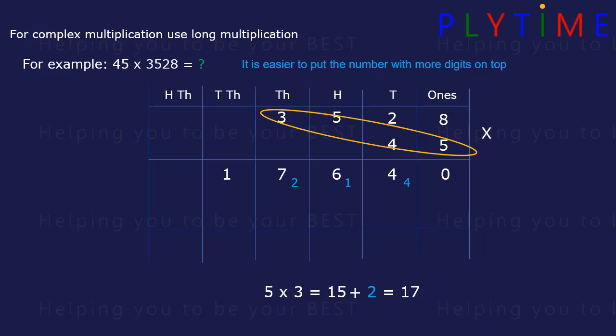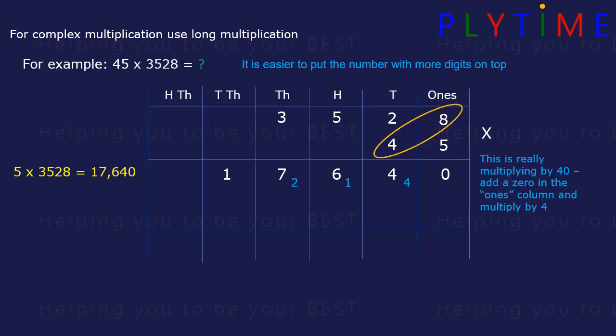This top number is the same as 5 times 3528. Now we multiply by the 40. We add a zero in the ones column because we're multiplying by tens.